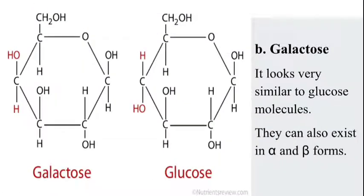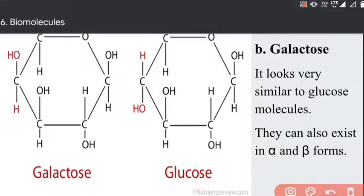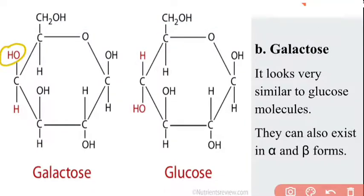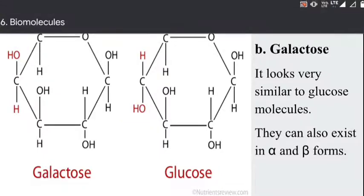The second type of monosaccharide is galactose. Galactose is very similar to the glucose molecule — there is little structural difference between them, except in the alpha and beta forms. As seen in the two molecules shown, they can appear as mirror images of each other: the OH group is on one side (alpha position) in one form, and on the other side (beta position) in the other form.